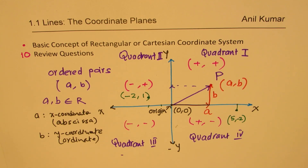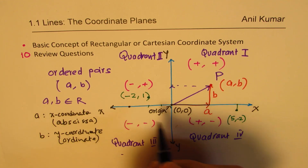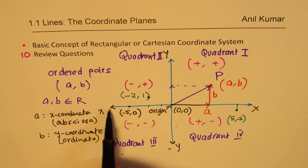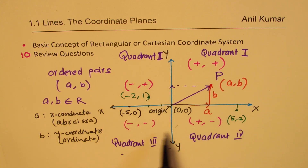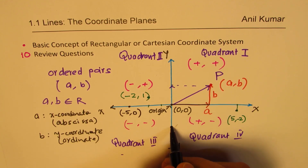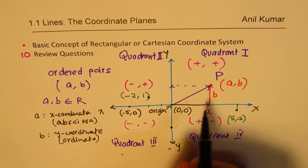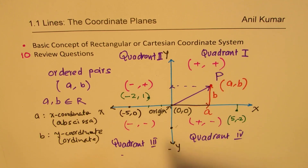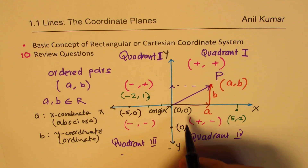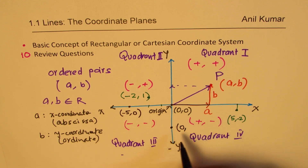Some questions we can ask: where will a point like (-5, 0) lie? This point on the x-axis does not lie in any of these quadrants — it lies on the axis. Similarly, a point on the y-axis does not lie in any quadrant. Any point on the y-axis will have a zero value for x and some value for y.